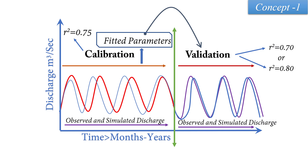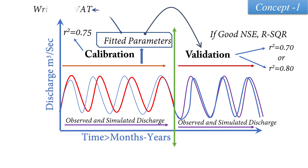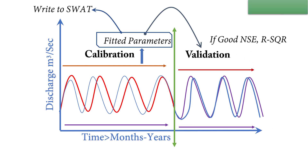Then we receive some different accuracy — it may be more than or less than our calibration result. When we are satisfied, the calibration period has served its purpose because we are only dealing with the fitted parameter. Calibration means receiving the fitted parameter for a catchment. If we receive a good NSE and good R-squared, then we write this value to the SWAT model. This is Concept 1.